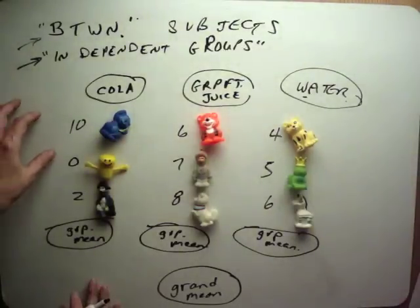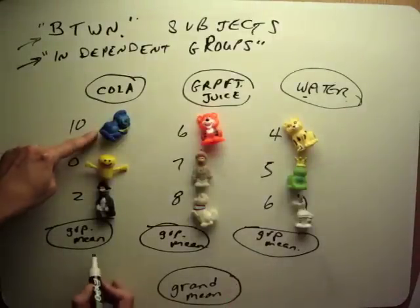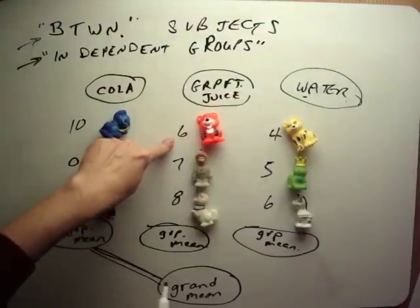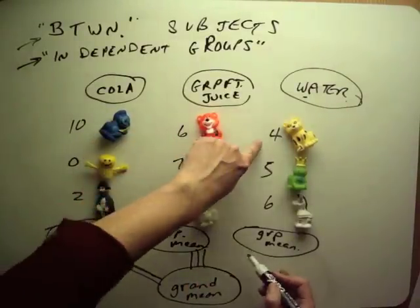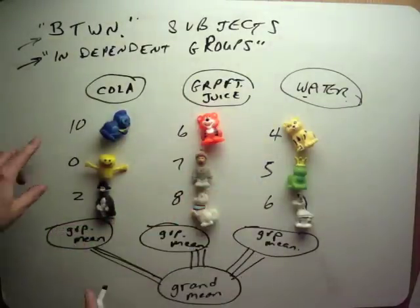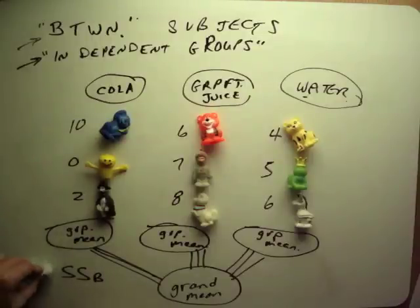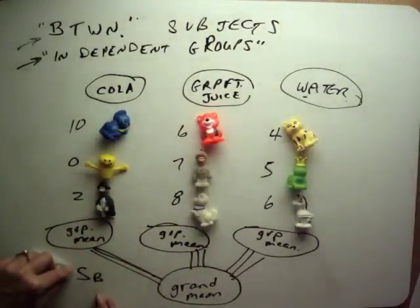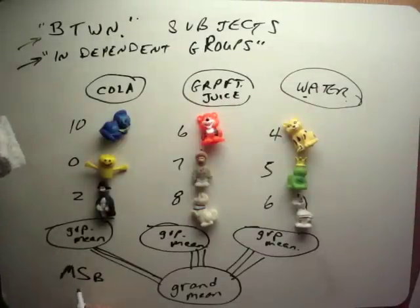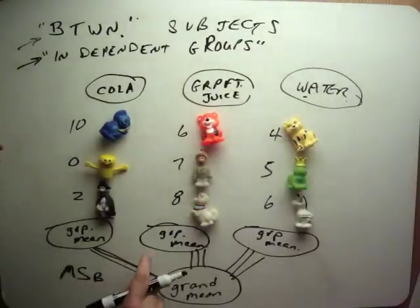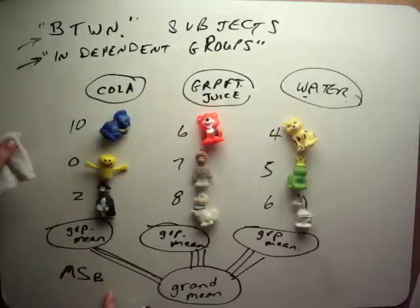We get deviation scores between groups by taking each person's group mean minus the grand mean, squaring them, and summing them up to make a sum of squares between groups. Then we convert that into an average — mean squares between — using degrees of freedom to divide by. This gives us a measure of how far apart the groups are. We hope our treatment was extreme enough that these distances are big, so that mean squares between is large.